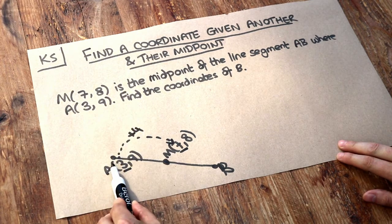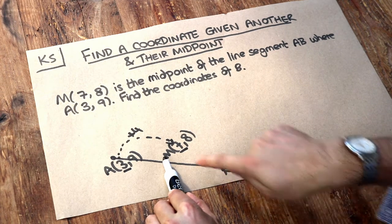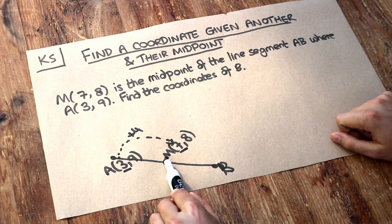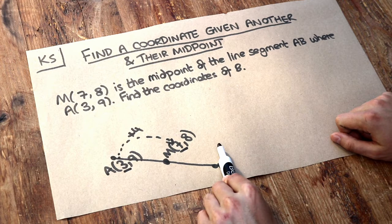So if we move across 4 like this to the right, can you see that if M is the midpoint, we need to move another 4 across to the right to get to the point B?